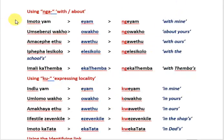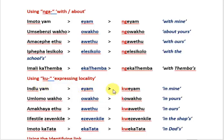Using 'nga' meaning 'with' or 'about': 'imoto yam' — my car; 'eyam' — mine; 'ngeyam' — with mine. Because the possessive pronoun already begins with a vowel, we only require the 'nga'. Using 'ku': 'indlu yam' — my house; 'eyam' — mine; 'kweyam' — in mine.